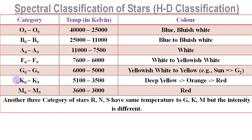The K category stars have temperature 5,100 Kelvin to 3,500 Kelvin. The color of these stars is yellow, orange, or red. Higher temperature K stars have color red, and the middle temperature stars have color orange.